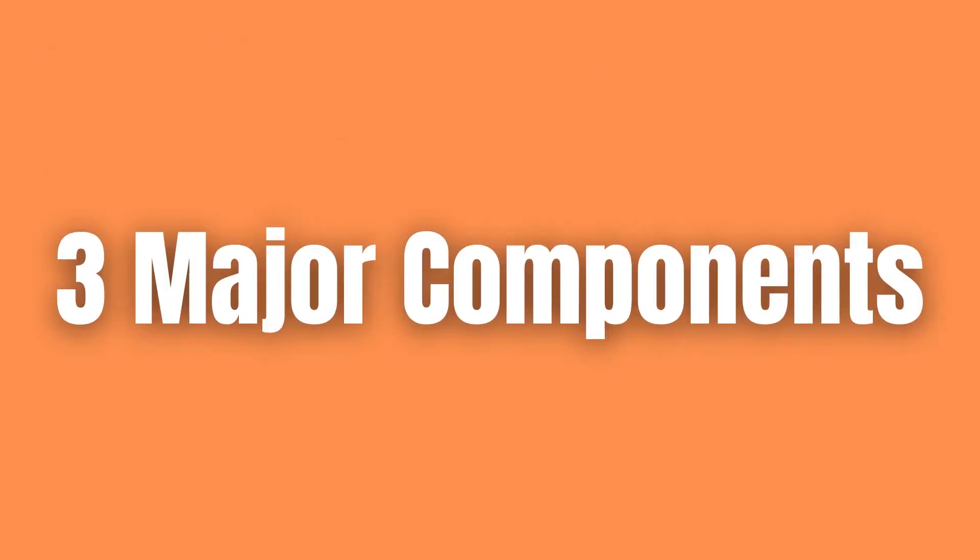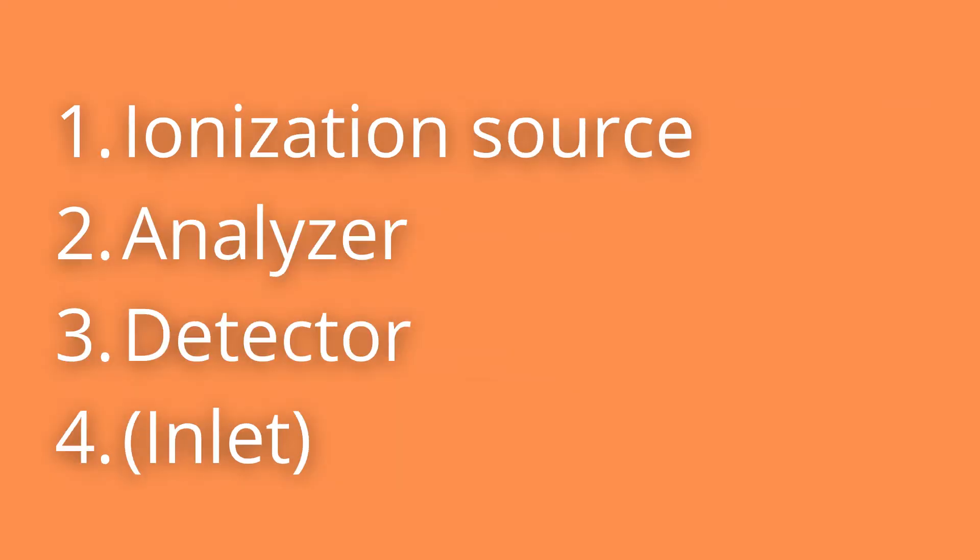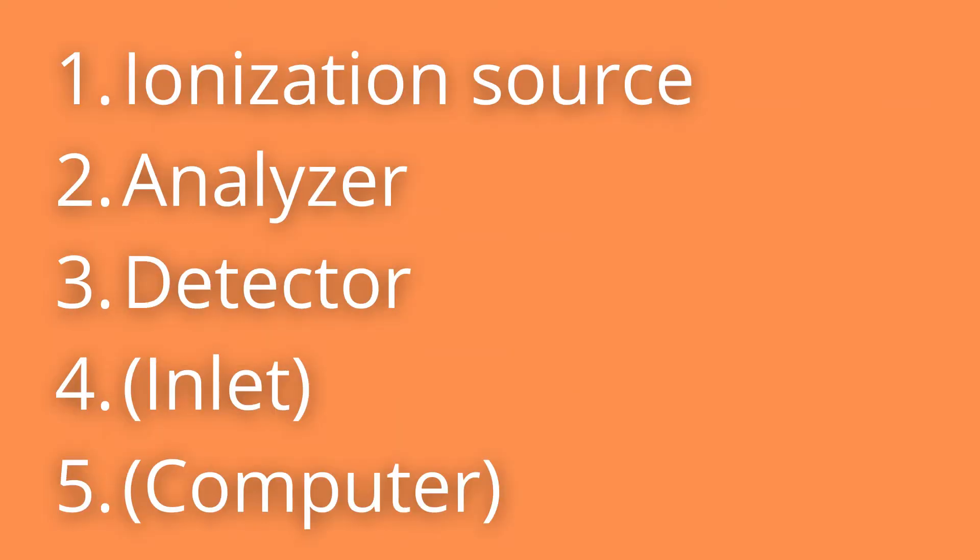In general all mass spectrometers consists of three major components: one, an ionization source, two, an analyzer, and three, a detector. In addition they also have an inlet for sample loading and a computer for data analysis.